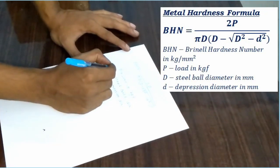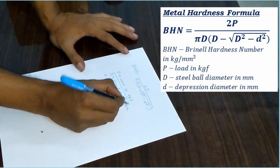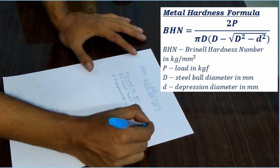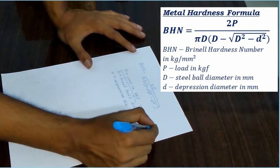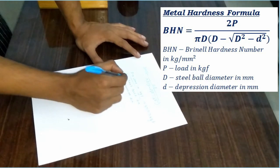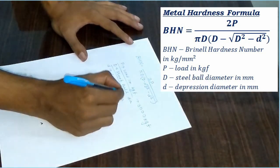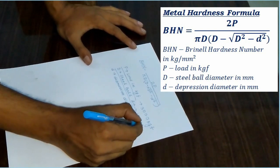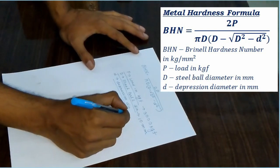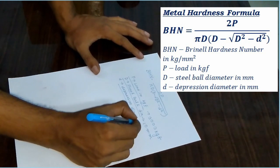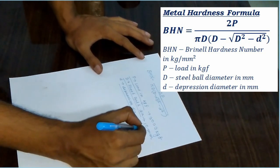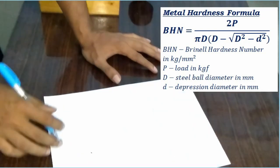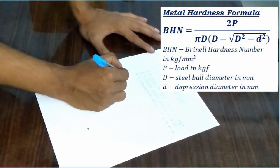P is load in kg farad. We give the load of 3000 kg farad. D is still boiled dia which is for this test. It is 10 mm. And this is depression dia. This is what we measured in microscope. It is 4.3 mm. By this, we can measure the renal hardness number.